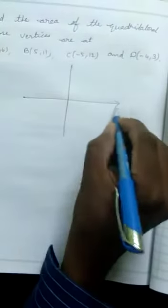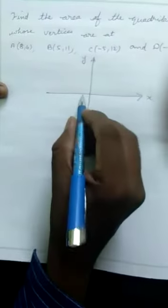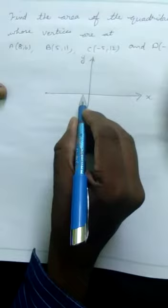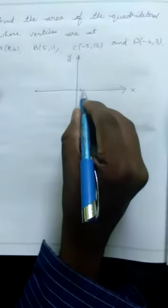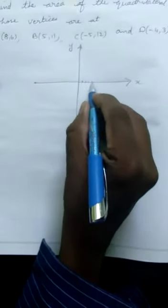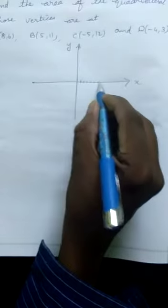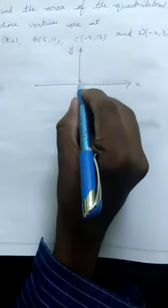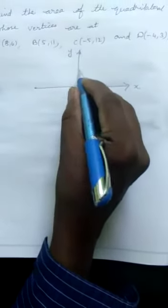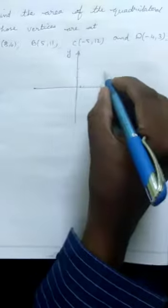This is the x-axis and this is the y-axis. We locate point A at (8,6): x-axis value 8, y-axis value 6. So point A is at 8,6.